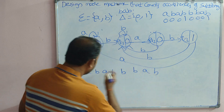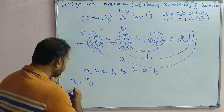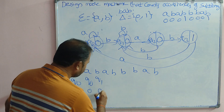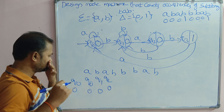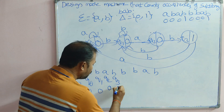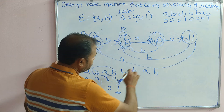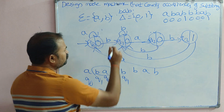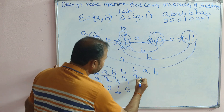Let's trace the example ABABBBAB. q0 is the initial state. q0 on A goes to q0, output 0. q0 on B goes to q1, output 0. q1 on A goes to q2, output 0. q2 on B goes to q3, output 1 — we found substring BAB. Now at q3, q3 on B backtracks to q1, output 0.